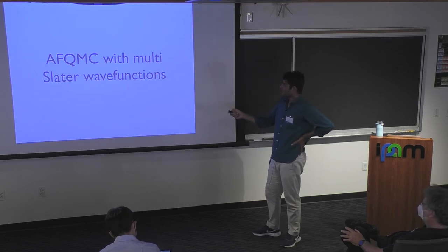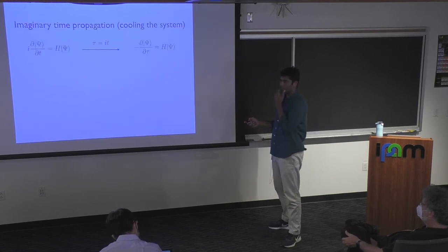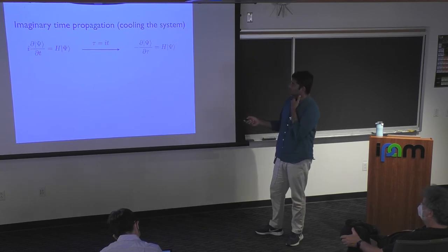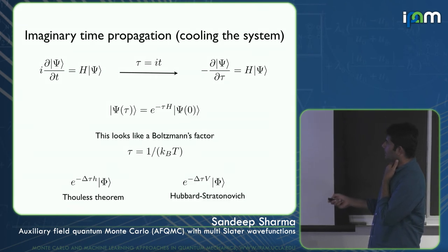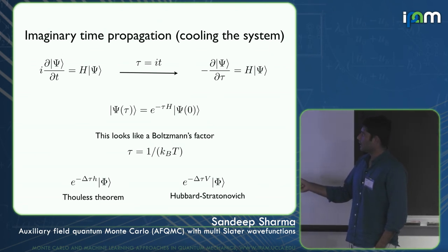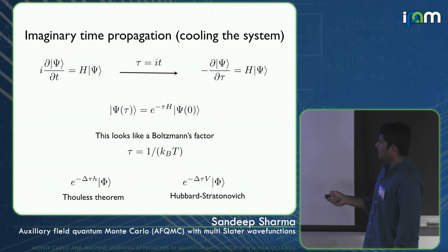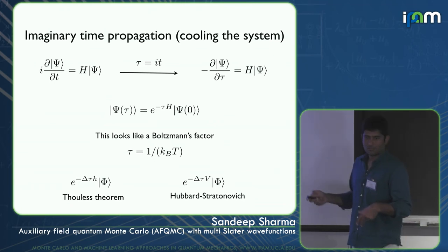Now for the second part: how AFQMC can use multi-Slater wave functions. AFQMC effectively does imaginary time propagation — you replace the time in the Schrödinger equation with imaginary time and propagate forward. No matter what ψ₀ you start with, as long as it has nonzero overlap with the ground state and you propagate far enough, you will converge to the ground state. The unique defining feature of AFQMC is that it treats the exponential of the one-body operator exactly using Thouless's theorem, while the two-body operator is handled via Hubbard-Stratonovich transformation.